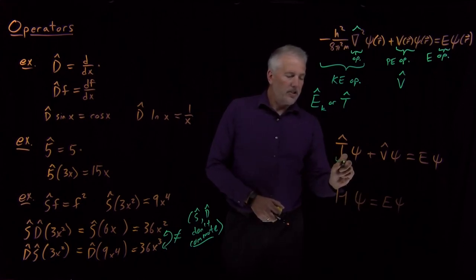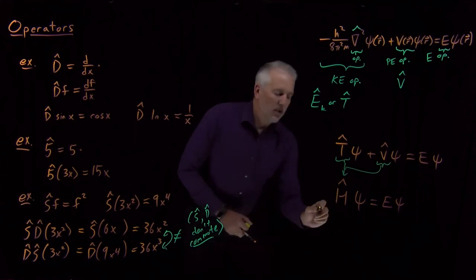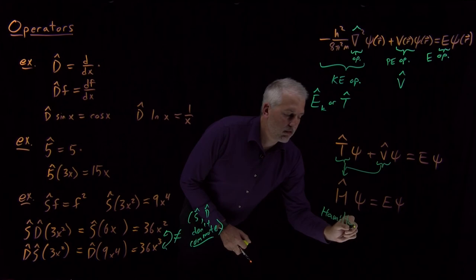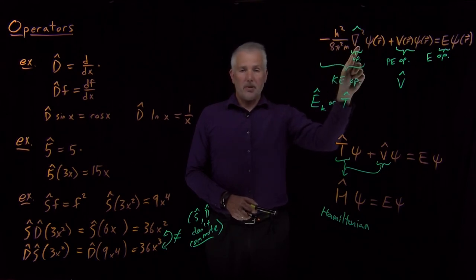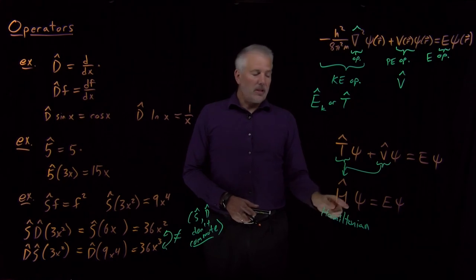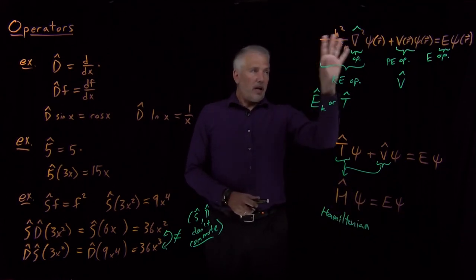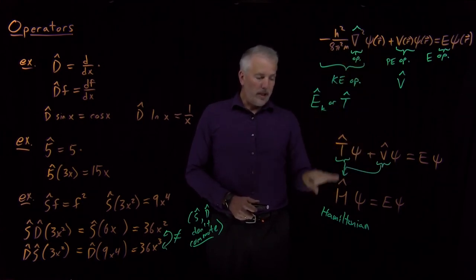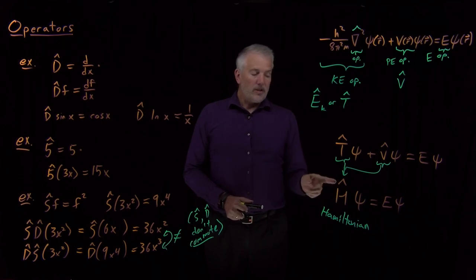If I rewrite the potential energy acting on ψ and kinetic energy acting on ψ and combine them into a single operator, that operator is called the Hamiltonian. The Hamiltonian operator — T-hat plus V-hat — acting on ψ is defined as minus h² over 8π²m times the Laplacian of the wave function, added to the potential energy times the wave function. So yet another way of writing Schrödinger's equation is: the Hamiltonian operator acting on a wave function gives back the energy times the wave function. The next thing we have to do is understand how to solve equations like this one — equations that involve operators — to find the functions they act on.